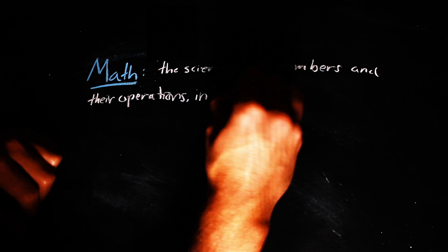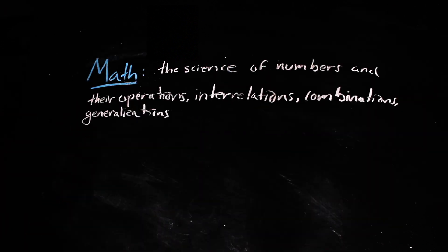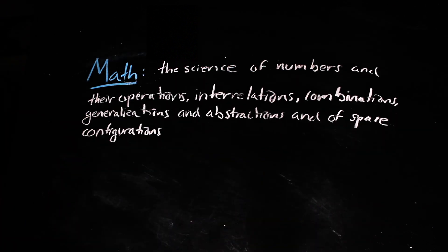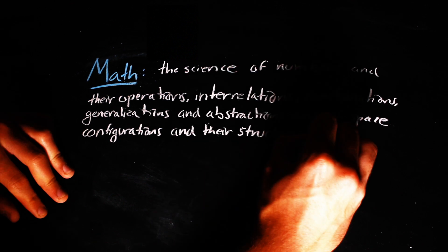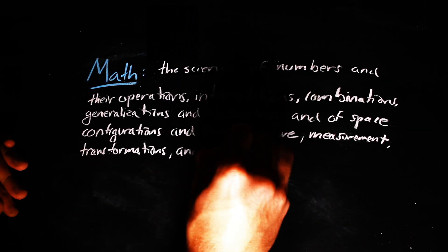Math, on the other hand, is defined by the Merriam-Webster Dictionary as the science of numbers and their operations, interrelations, combinations, generalizations, and abstractions, and of space configurations and their structure, measurement, transformations, and generalizations.